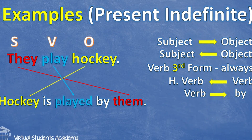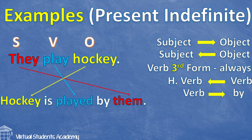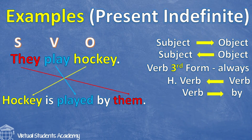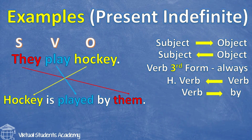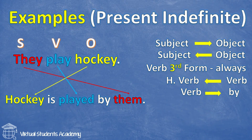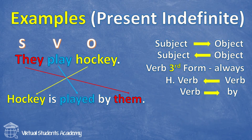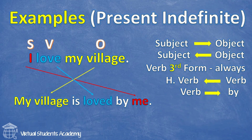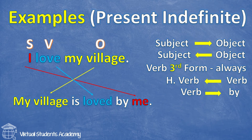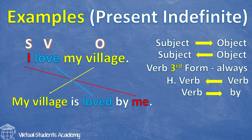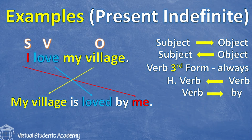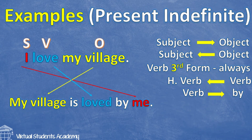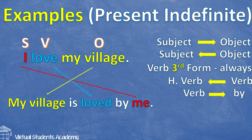We use 'by' immediately after the verb. Look at the second example: 'They play hockey' becomes 'Hockey is played by them' — 'is' because of present indefinite tense. And the third example: 'I love my village' becomes 'My village is loved by me.'